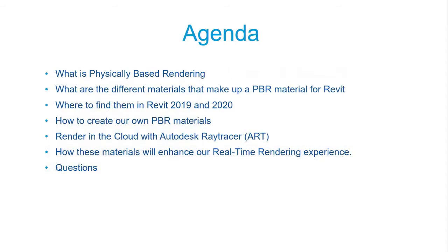So what are we going to be talking about today? What is physically-based rendering? We're going to talk about the different materials that make up a PBR material in Revit, because with the rise of the 2019 physically accurate materials came a whole new way to push our renders to the next level. We'll look at where to find them in Revit 2019 and 2020, how to create our own materials from scratch, some free websites, and some paid places too. Then we're going to look at Revit rendering in the cloud using Autodesk Ray Tracer, and how it can enhance our real-time rendering experience with Enscape, then close out with questions.